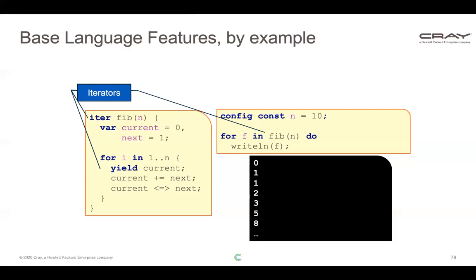The whole left side of the code is an iterator, invoked on the right in a for loop. Iterators in Chapel are like procedures that, rather than returning a single value, yield values back and continue executing. When I invoke 'for f in fib(n)', each value yielded on the left is bound to the index variable f for that loop iteration, then we return to the iterator and continue until the next yield or fall out.